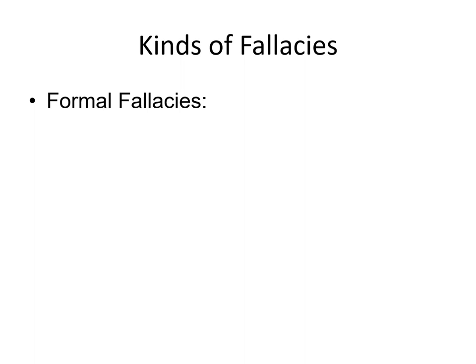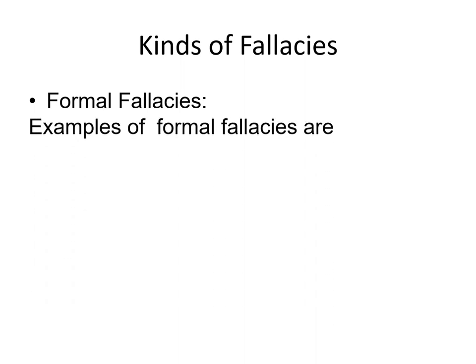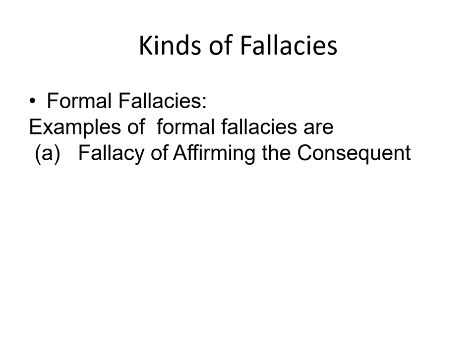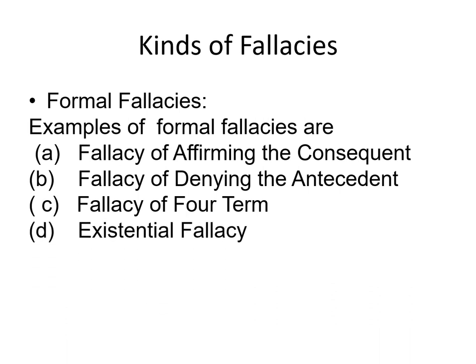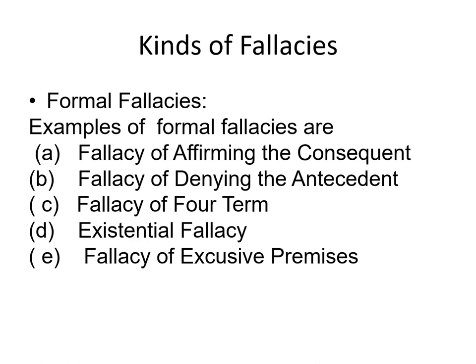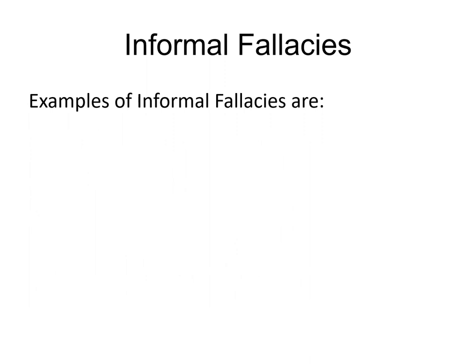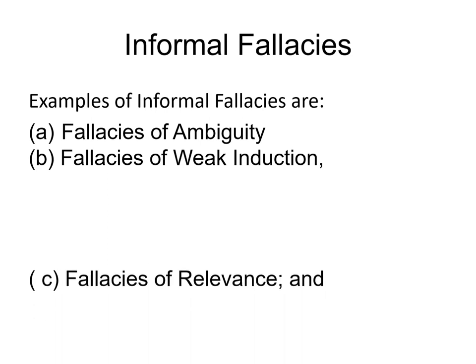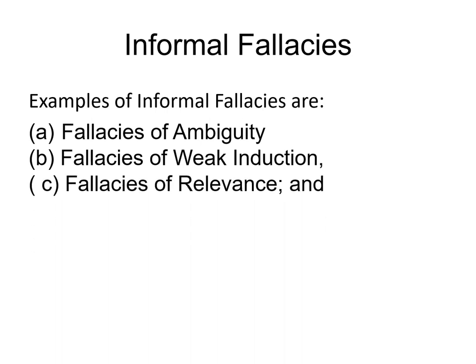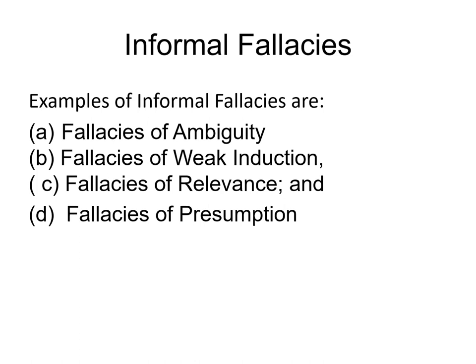Kinds of fallacies: We have formal fallacies. Examples of formal fallacies are the fallacy of affirming the consequent, fallacy of denying the antecedent, fallacy of faulting, existential fallacy, and fallacy of exclusive premises. Informal fallacies include fallacies of ambiguity, fallacies of weak induction, fallacies of relevance, and fallacies of presumption.